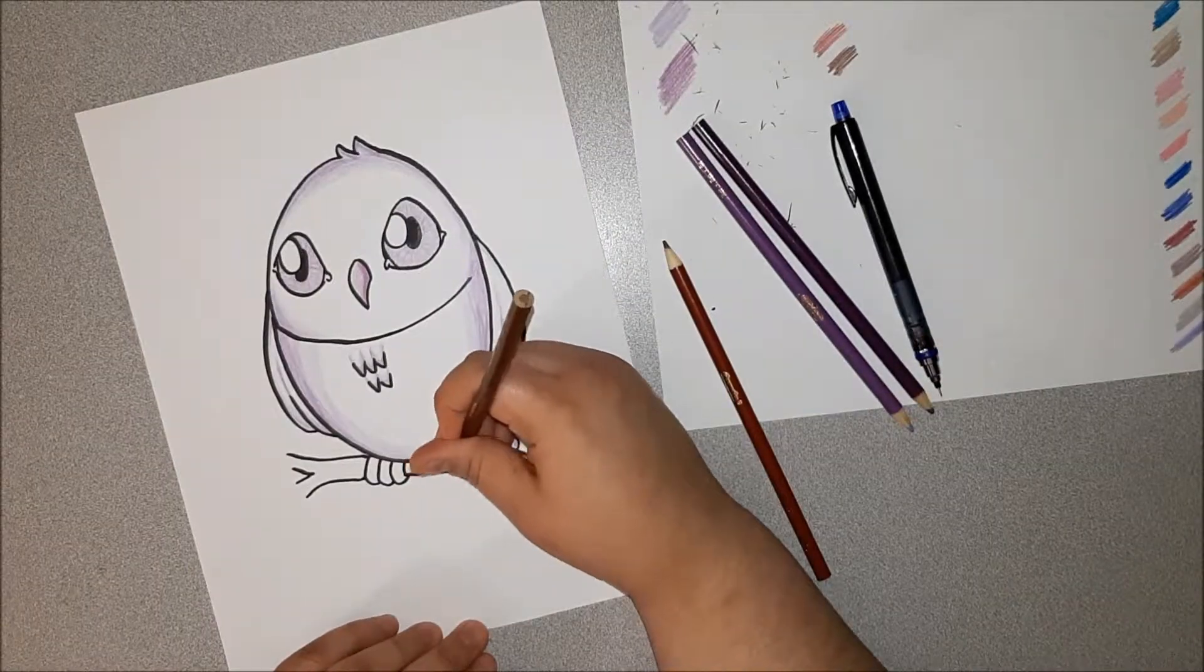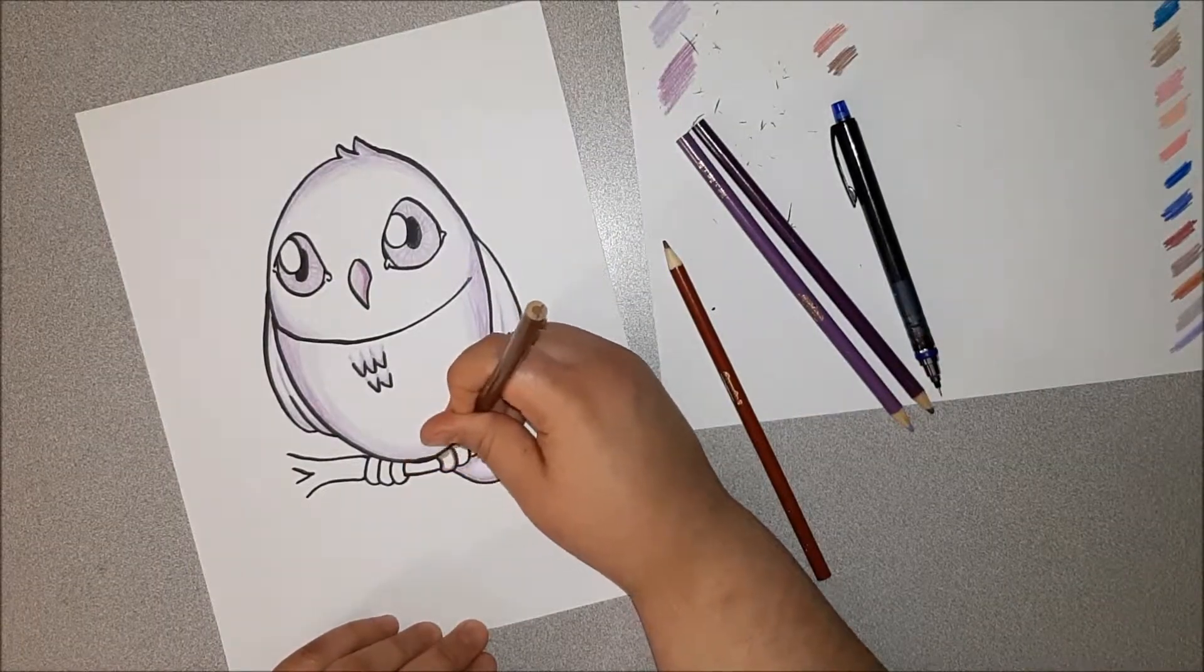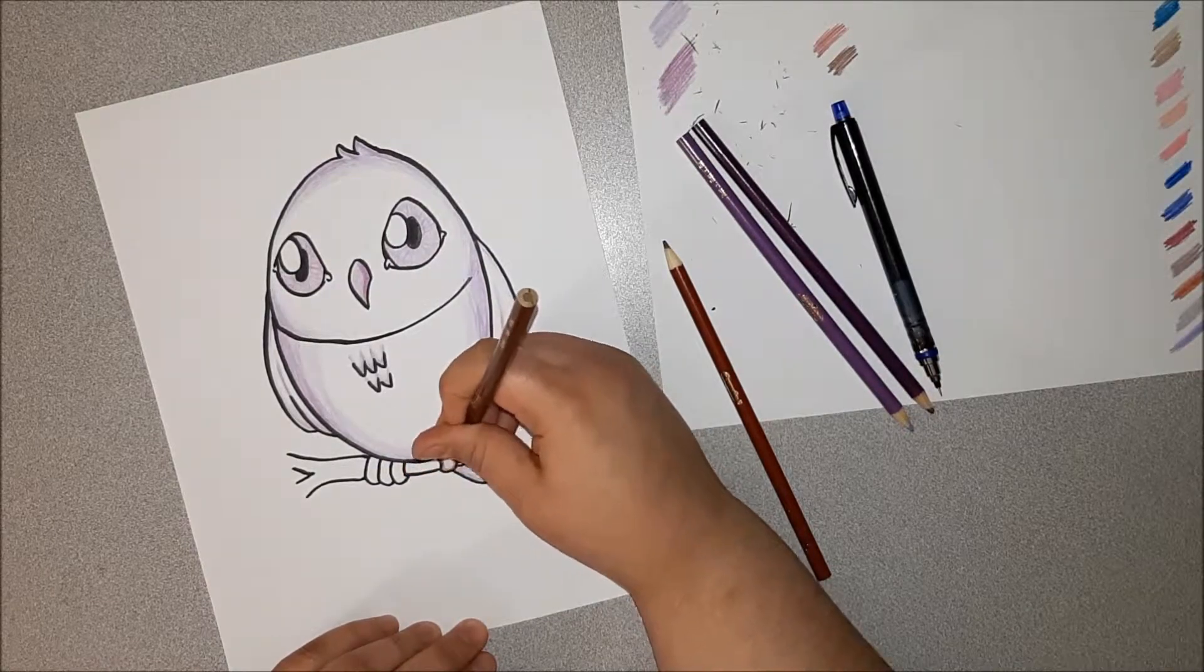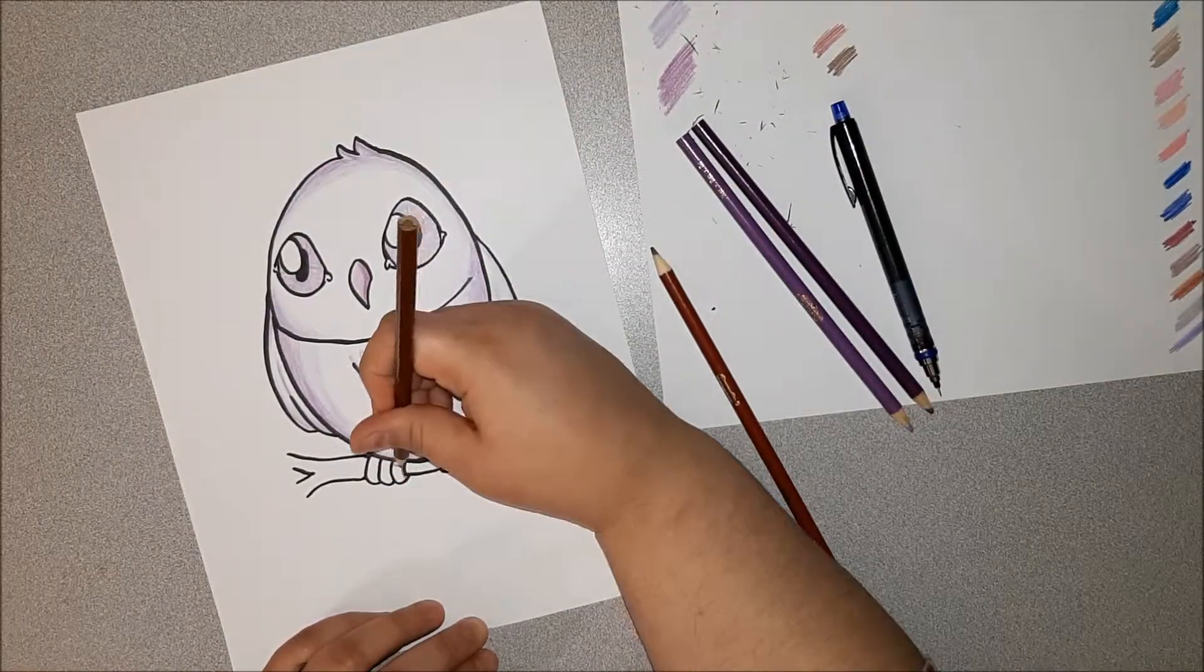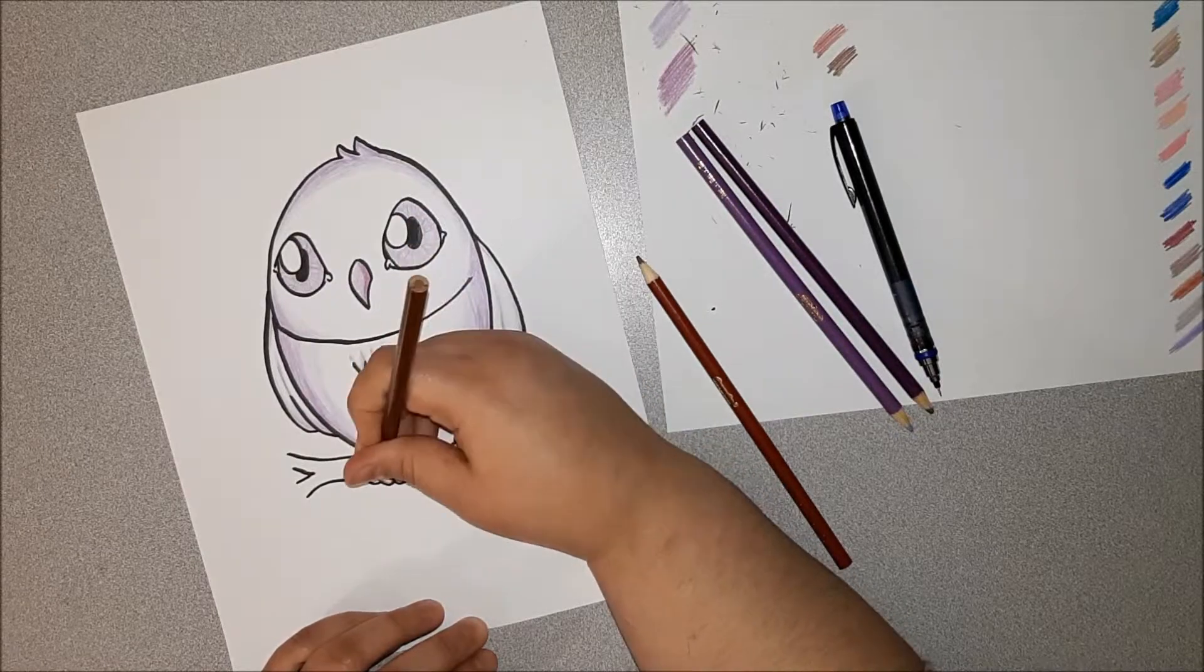There was a small cut there because Tammy forgot to grab brown because she didn't until just then. She forgot that she was going to color the branch. She'd been focusing mostly on the owl.